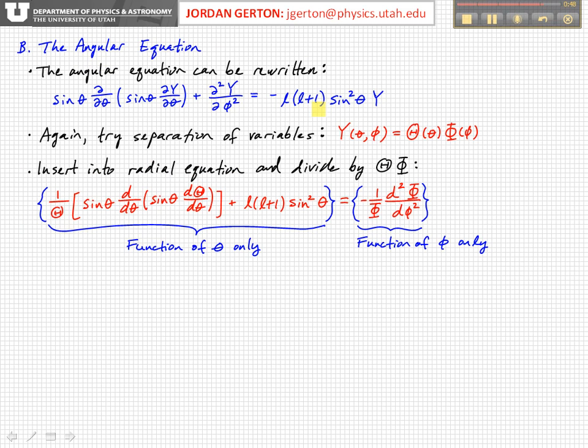And just like we always do, since this is a function of two variables, Theta and Phi, we try separation of variables. That is, we try to write these Y functions, which are functions of both Theta and Phi, in terms of two independent functions: capital Theta of theta times capital Phi of phi. And then we basically see how far that gets us and what we learn and whether we can actually solve that. So what we do is we plug this expression for Y into the angular equation and see where it goes.